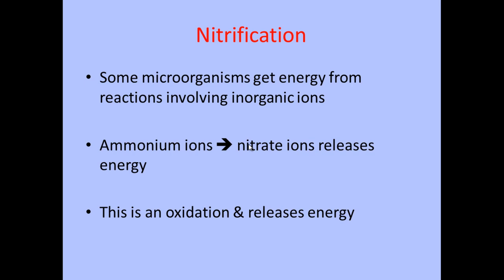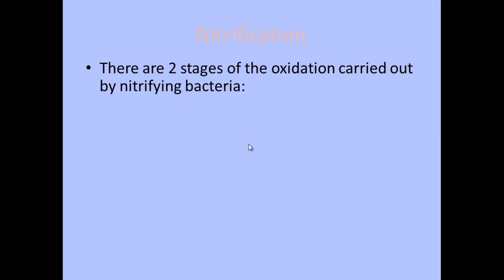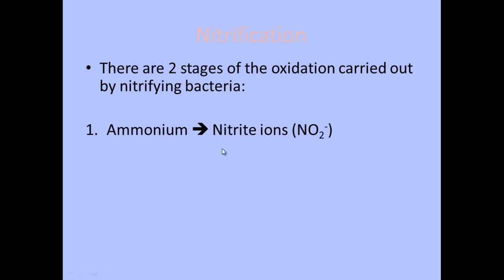Oxidation is the loss of electrons, and this reaction releases energy, which is beneficial to the bacteria as it can then use that energy for vital cell processes. The first stage of nitrification is the conversion of ammonium ions into nitrite ions, which have the chemical formula NO2. So ammonium, NH4, is converted into nitrite ions, NO2.